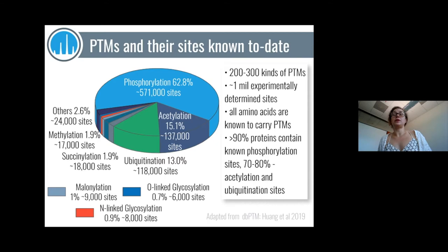Today we know that over 90% of human proteins contain known phosphorylation sites, and at least 70–80% have other major PTMs. They're extremely widespread, the number is constantly growing, and new sites are being discovered as technologies improve. It is a very sizable chunk of the proteome that is being modified through post-translational modifications.